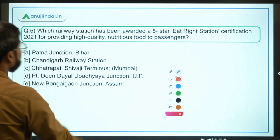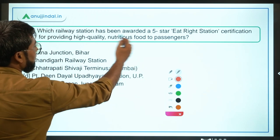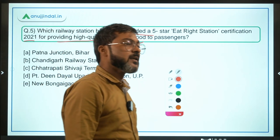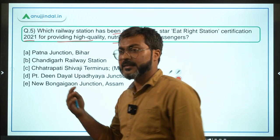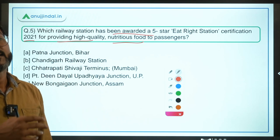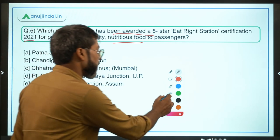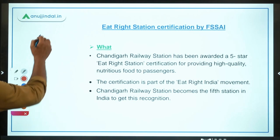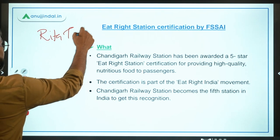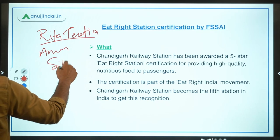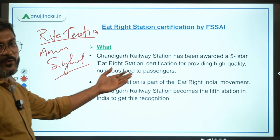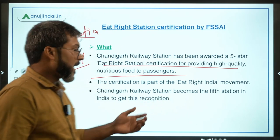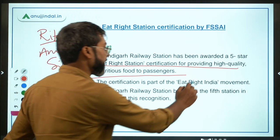Question five, the last question: Which railway station has been awarded a five-star Eat Right Station certification 2021 for providing high-quality nutritious food to passengers? This is the fifth railway station to receive this certification. The certification is given by FSSAI — the Food Safety and Standards Authority of India — whose Chairperson is Rita Teotia and CEO is Arun Singal. Chandigarh Railway Station has been awarded this certification. It is part of the Eat Right India movement.